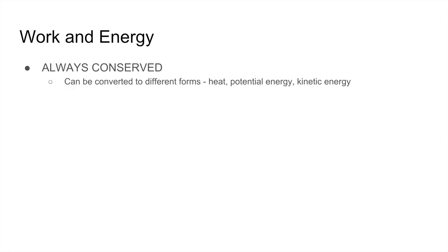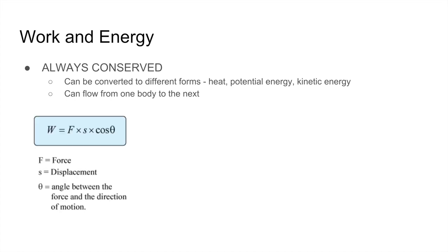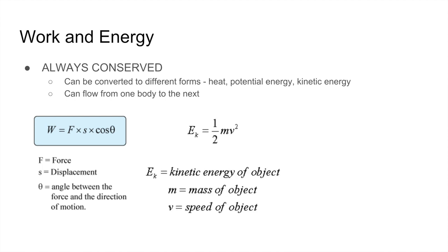For work and energy, the key concept is that energy is always conserved — it can be converted into different forms: heat, potential energy, kinetic energy, and can flow between bodies. When there's friction, energy isn't lost; it's dissipated as heat or sound. The work a force applies on an object is given by the dot product of the force vector and the displacement vector, or more simply F·s·cosθ, where θ is the angle between the force and the direction of motion. Kinetic energy is ½mv², where m is mass and v is speed.